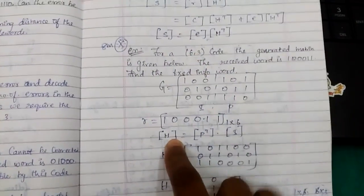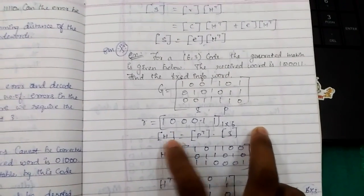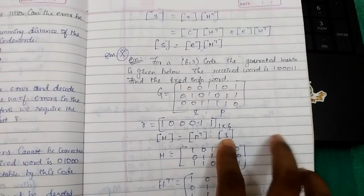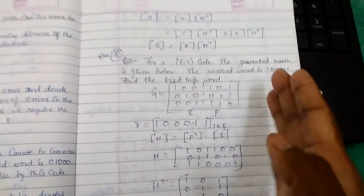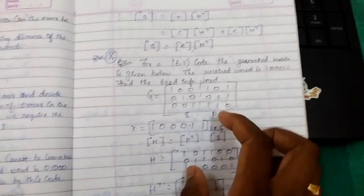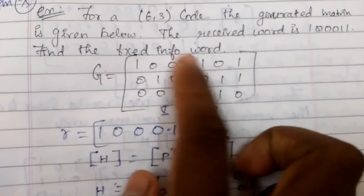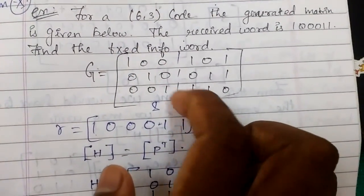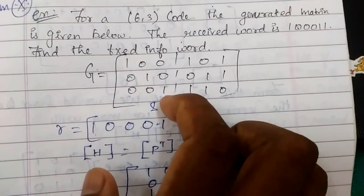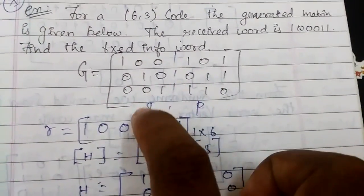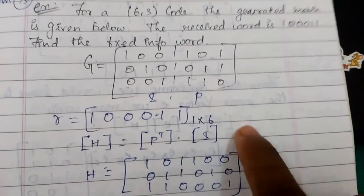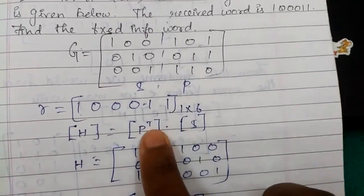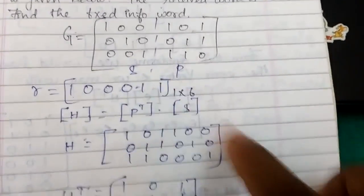H is the parity check matrix. The formula for H is [P^T | I], where I is the identity matrix and P is the parity matrix. From the given generator matrix G, we divide it into the parity part P and the identity part I. The identity part has ones only on the diagonal. After dividing G, we find H using the formula: H = [P^T | I], where P is written in transposed form.